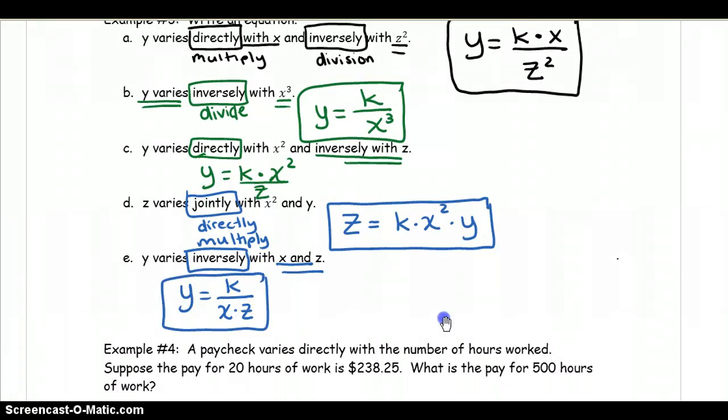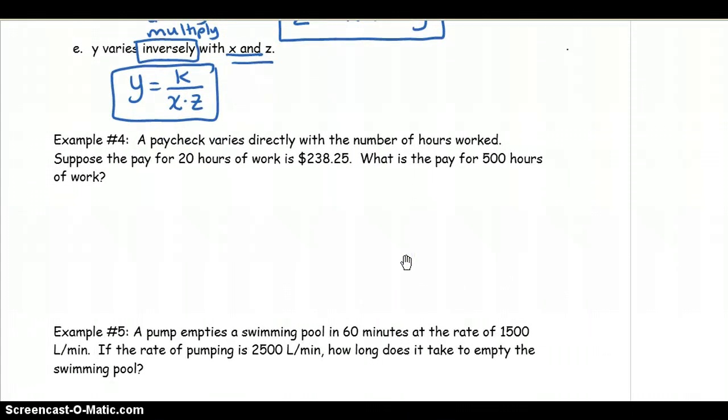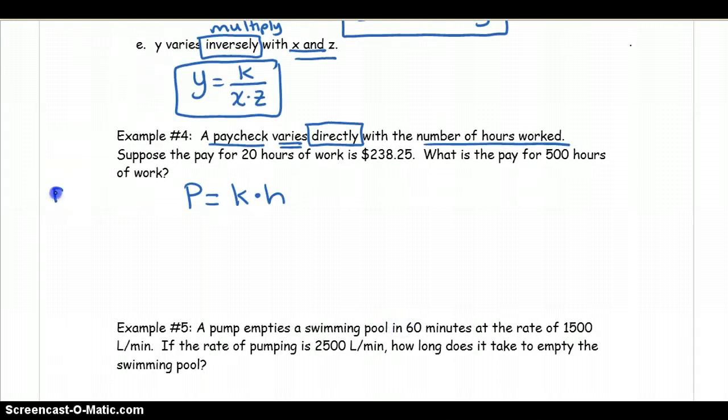Let's do some application problems. This is a paycheck varies directly. So we're going to go ahead and highlight directly with the number of hours worked. Suppose the pay for 20 hours of work is $238.25. What is the pay for 500 hours of work? So we have a paycheck, which I'm going to represent that as p equals, so varies directly. So I know it's a k times with the number of hours worked. And I'm going to represent the number of hours worked by h. So p is going to equal dollars on paycheck and h is going to equal number of hours worked.